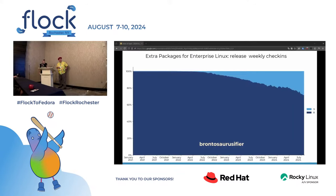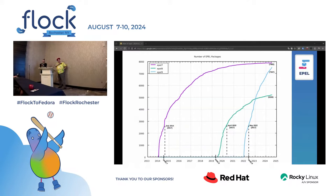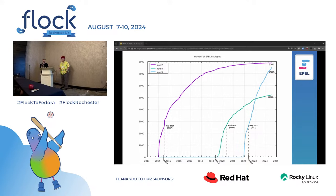EPL 9 is overtaking EPL 8 slowly. The next chart shows the number of EPL packages — this is what our crowd really cares about. The more packages in EPL, the more things you can do. EPL 7 is the leader, almost getting up to 8,000 packages before end of life. EPL 9 is the blue graph. Why is it so different from the green line? Modularity and Rust.